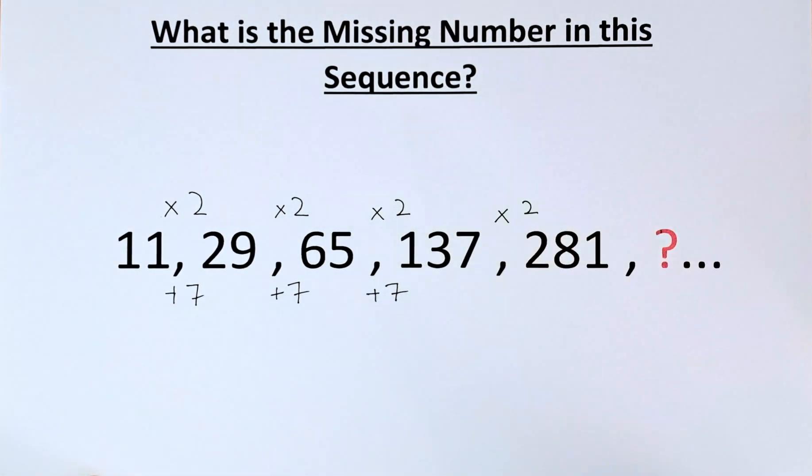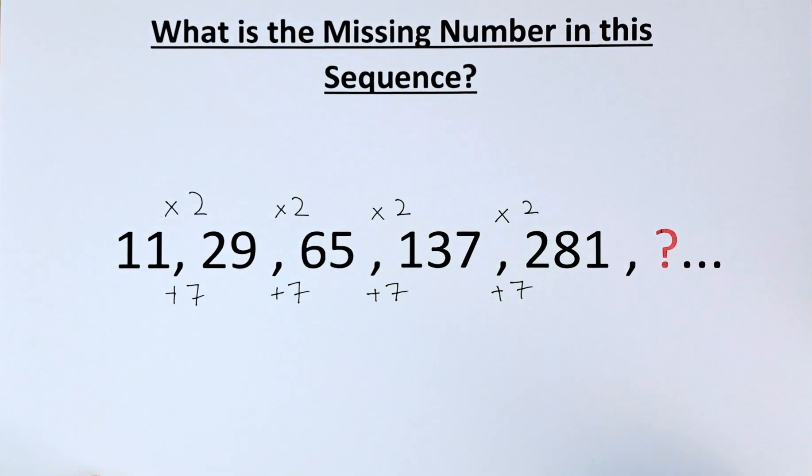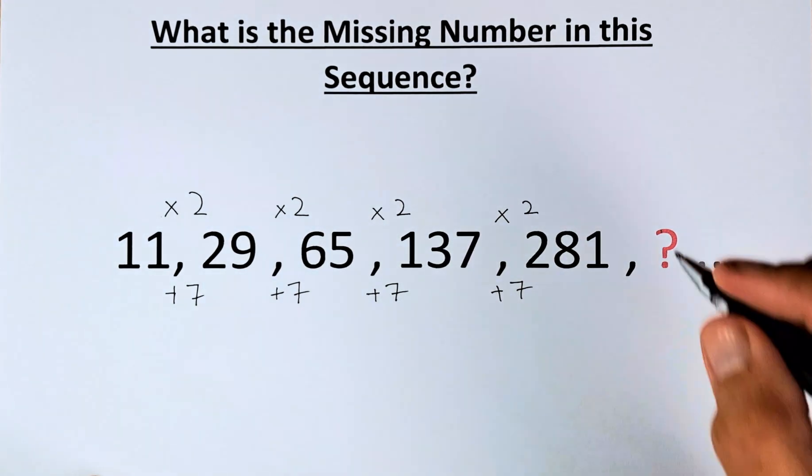And the next one, 137 multiplied by 2 is going to be 274. And then when you add 7, the answer is going to be 281.